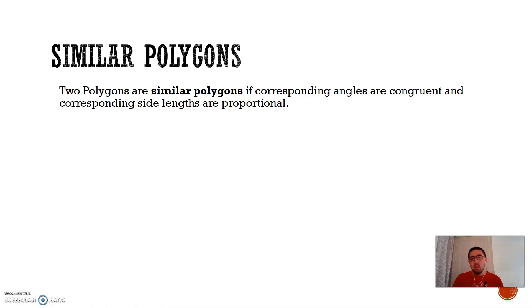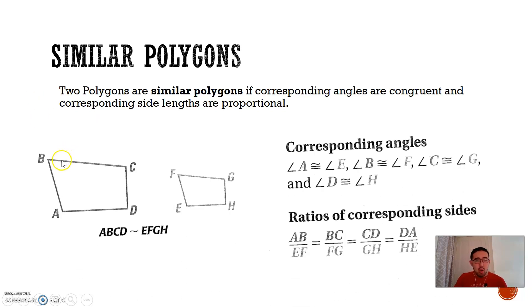The definition of similar polygons is when corresponding angles are congruent and corresponding side lengths are proportional. What does that mean? Well, if you have corresponding angles that, when flipped, would be right on top of each other, and if those angles are all congruent along with the ratios of corresponding sides being equal, then it's a similar polygon.